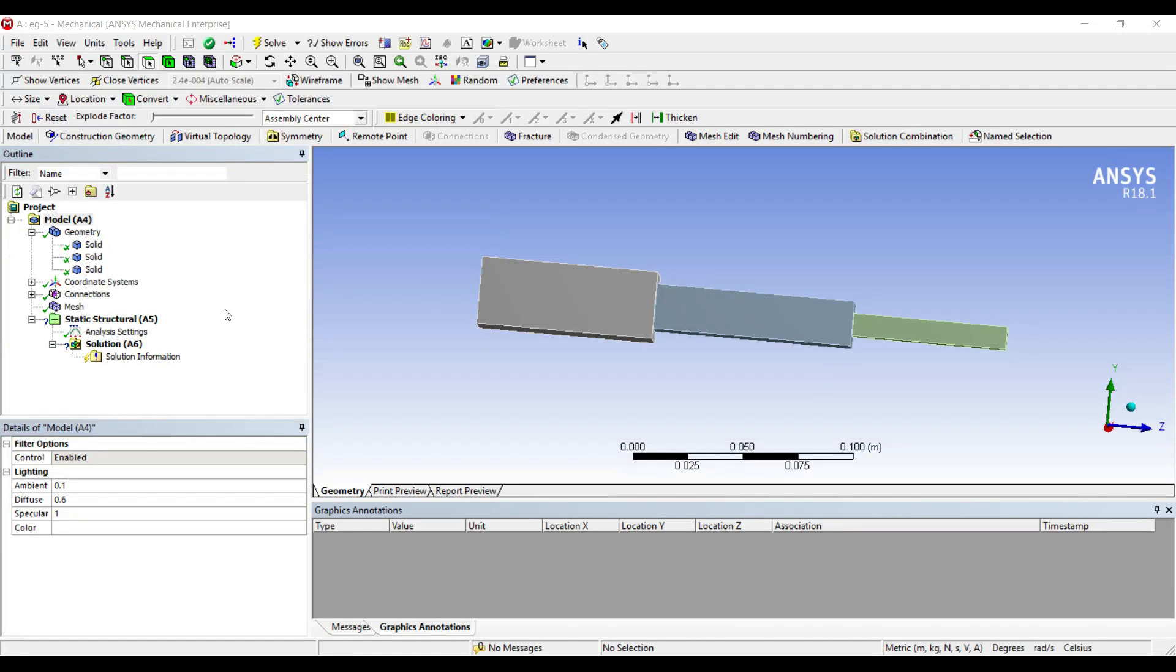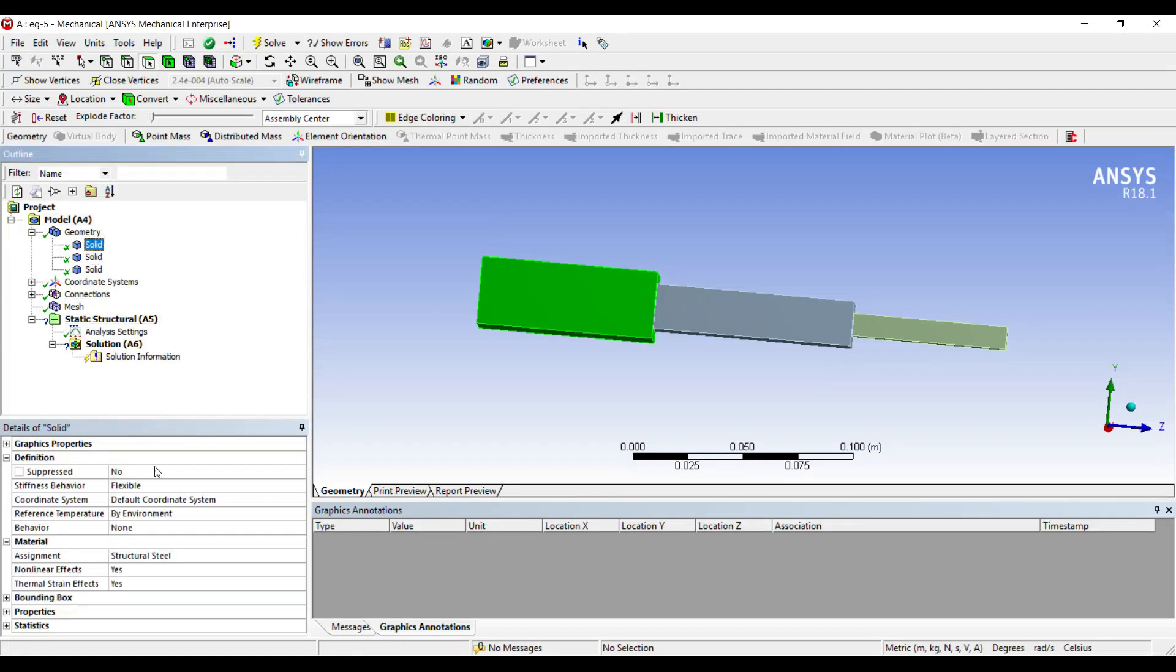I will go to solid. The first one is aluminum. Second solid is brass. Third solid I did not select because it is already structural steel. So material allocation is done.